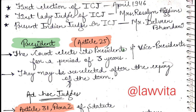The first lady judge of the ICJ was Mrs. Rosaline Higgins. The present Indian judge in the ICJ is Mr. Dalveer Bhandari. Next, regarding the president of the court: as per Article 25, the court elects its president and vice president for a period of three years.